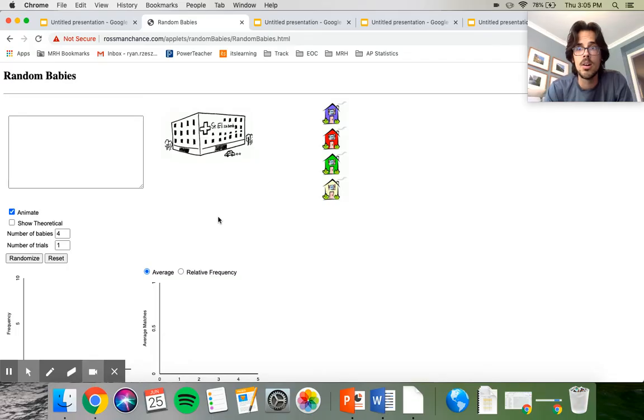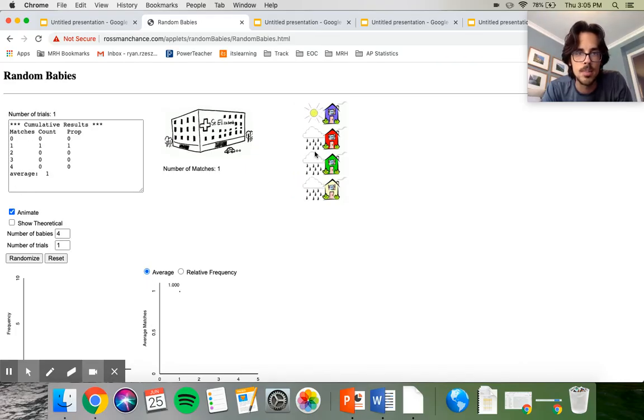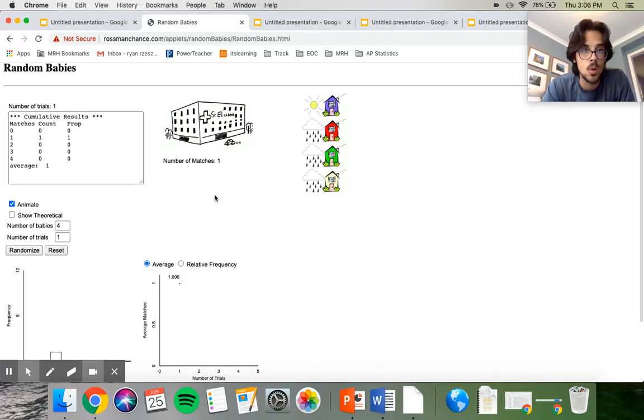We're just going to use a nice little computer applet here. In my problem we had textbooks, but the problem here is a little bit darker in that there's a hospital and there was a mix-up with babies. There are four babies trying to get back to their actual house. If you look right here, I'm going to run a trial. There goes the stork to the hospital, and here come the babies. You can see the blue one went to the right house, there's a little sun, but then the other three did not end up where they were supposed to, so there are rain clouds instead.